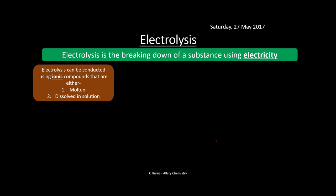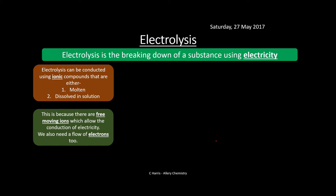We're going to start with electrolysis — quite a big chunk here. Electrolysis is the breaking down of a substance using electricity: 'electro' meaning electricity, 'lysis' meaning to break something. Electrolysis can be conducted using ionic compounds that are either molten or dissolved in solution, because the ions are free to move and conduct electricity. Graphite can also be used for electrodes as it has free electrons between its layers.